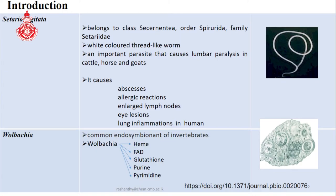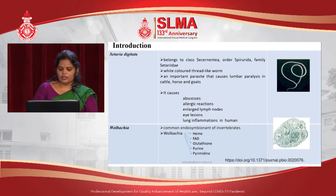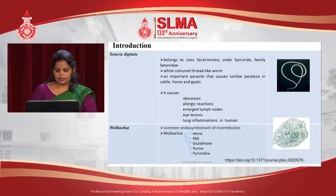Here is a small introduction about my research. Cetaria Digitata is a white-colored thread-like worm. It is an important parasite that causes lumbar paralysis in cattle, cows, and cords. It causes abscesses, allergic reactions, enlarged lymph nodes, eye lesions, and lung inflammation in humans. Wolbachia is a common endosymbiont of invertebrates — it is a bacterial genome that helps encode biosynthetic pathways in nematodes.